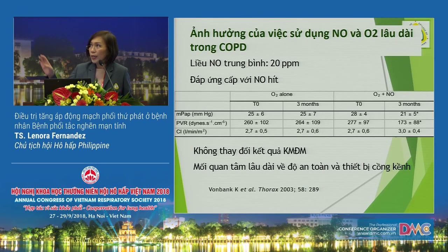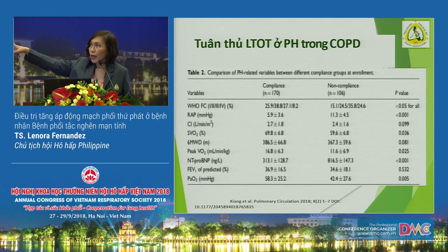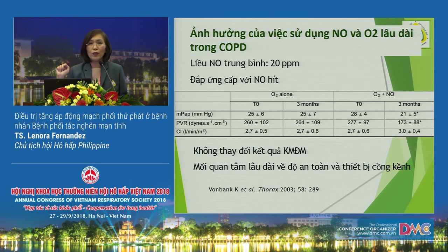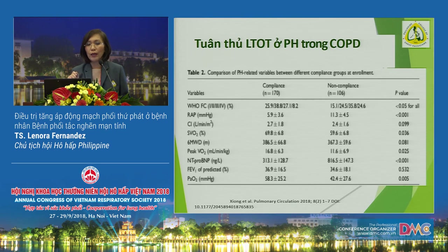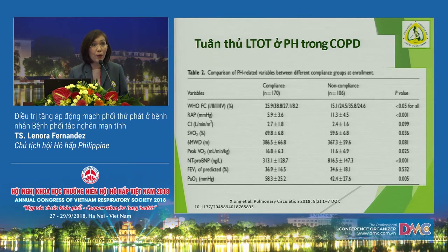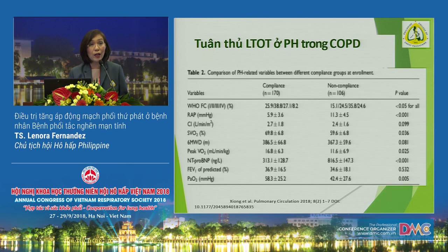Other therapeutic strategies include diuretics, which many clinicians would give. Anticoagulation is not really recommended unless the patient has pulmonary embolism or is at risk. Digoxin is not really recommended unless needed for rate control. Calcium channel blockers are not useful in pulmonary hypertension in COPD.